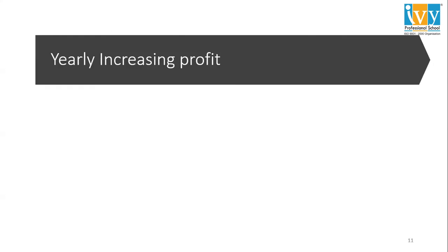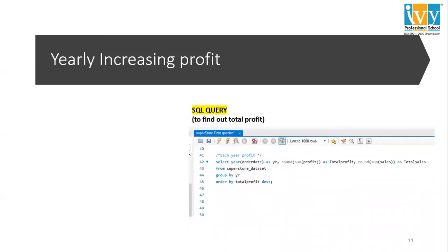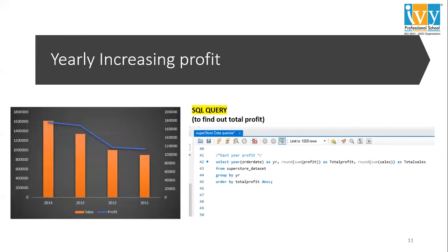For yearly increasing profit, to find it from the SQL query — I have mentioned it here. We have to group by year and sum the profit to find the total profit, and also sum the sales to find the total sales. Looking at the graphical chart, as the year progresses, as sales increase, the profit is also increasing.